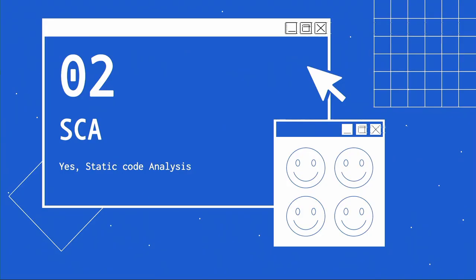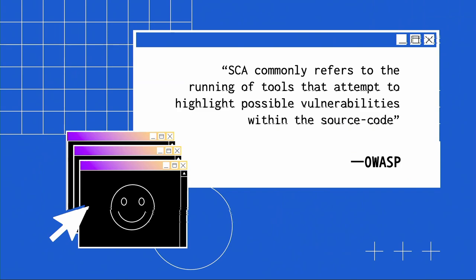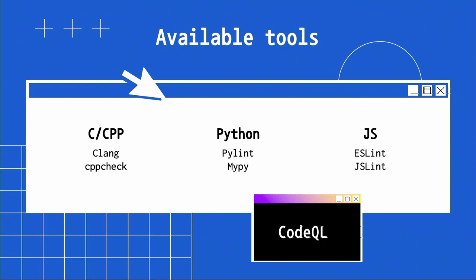So how can we use static code analysis to help us find bugs? Static code analysis, per OWASP, commonly refers to running tools that attempt to highlight possible vulnerabilities within the source code — or in simpler words, finding vulnerabilities before running the actual program. You don't have to write your own custom tools; you can just use your package manager. For C or C++ projects there's Clang or CPP check; for Python, PyLint, MyPy. And of course CodeQL, though it's a bit different because its main purpose is about the query language itself.